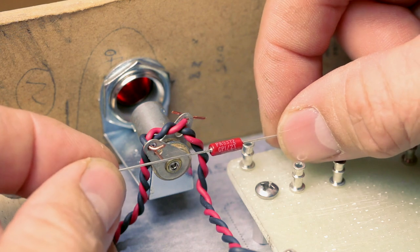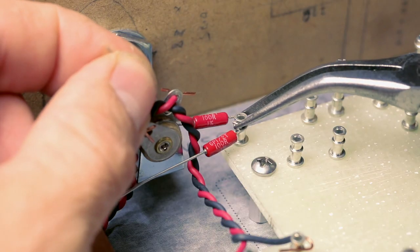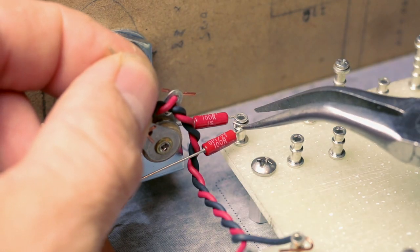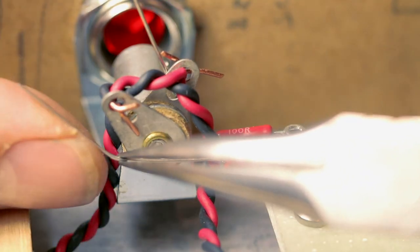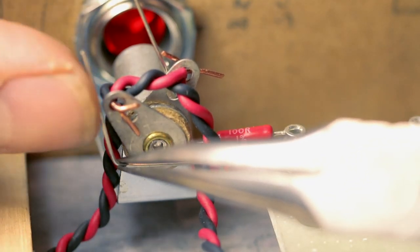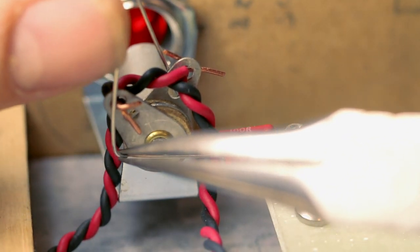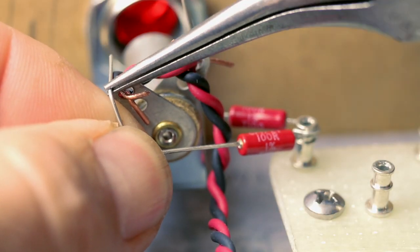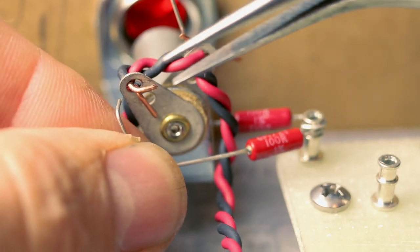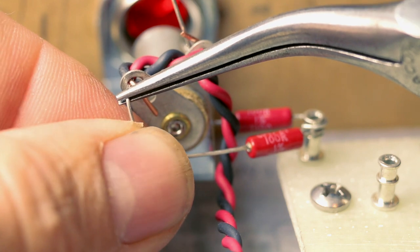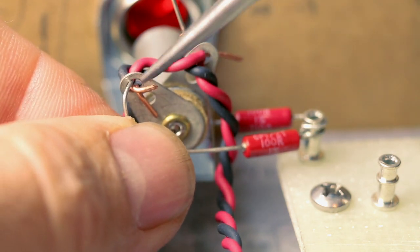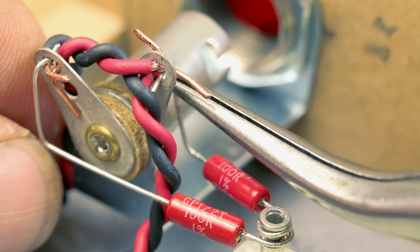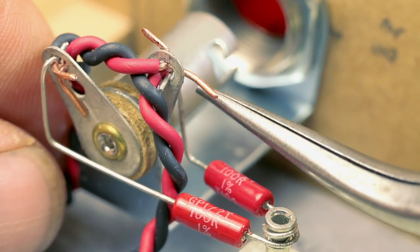If you're like me and using a transformer without a center tap, we still have one more thing to take care of. We need to create our own pseudo center tap and we can do this by running a 100 ohm resistor from either side of the filament winding to ground. The best place to do this is from each termination point of the indicator lamp.